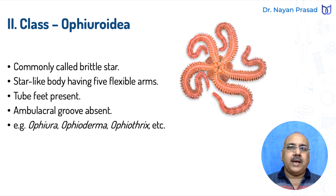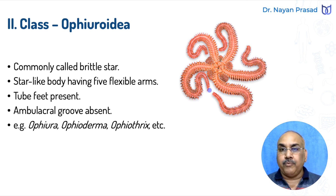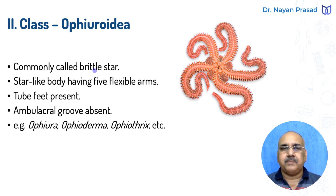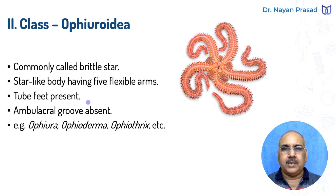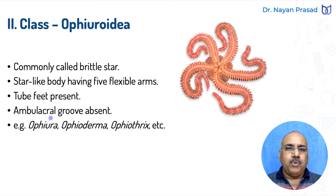Class Ophiuroidea: the common example is Ophiura, commonly known as brittle star. Members of this group also have a star-like body with five flexible arms — if more, in multiples of five. Tube feet are present and help mainly in locomotion, but also in respiration, food capturing, etc. Ambulacral groove is absent. Common examples are Ophiura, Ophioderma, Ophiothrix, etc.